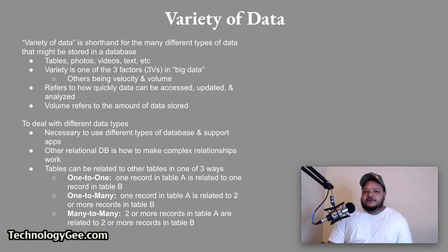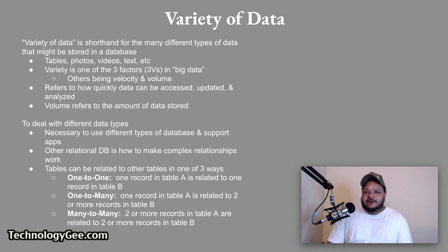Variety of data: the phrase variety of data refers to the many different types of data that might be stored in a database, such as tables, photos, videos, texts, etc. Variety is one of the three V's in big data, with the others being velocity and volume. Velocity refers to how quickly data can be accessed, updated, and analyzed. Volume refers to the amount of data stored. To deal with different types of data, it is often necessary to use different types of database and support apps. Another consideration for relational database data is how to make complex relationships work.